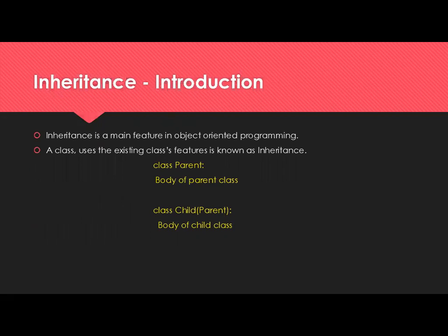First one: inheritance introduction. Inheritance is the main feature in object-oriented programming. A class that uses the existing class features is known as inheritance. In a single word, you can call it reusability of code. The basic syntax of inheritance in Python is: a parent class with its body, and in the child class, inside parentheses, you mention the parent class you want to inherit.